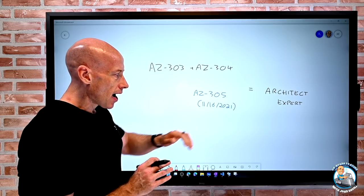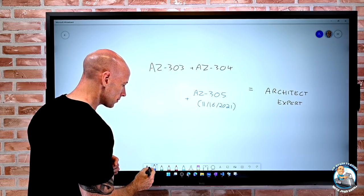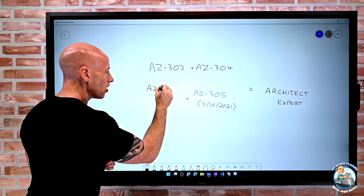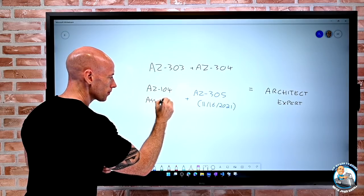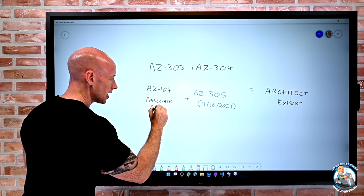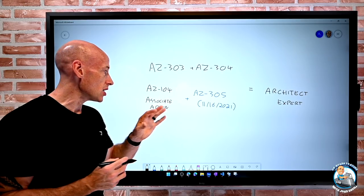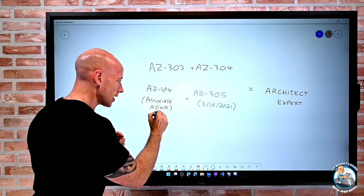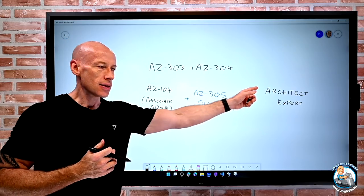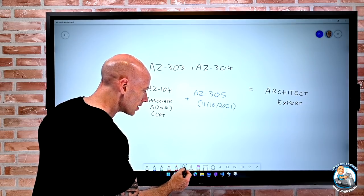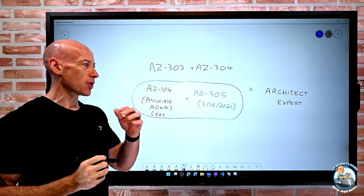So now what's going to happen is to get that Architect Expert certification you're going to combine that exam with the AZ-104, i.e. the Associate Administrator exam. So that AZ-104 would give you the Azure Administrator Associate certification, so that gets you a certification there and then once I've got that I then take AZ-305 to get my Architect Expert. So this is kind of this future path on how we get our Architect Expert certification.